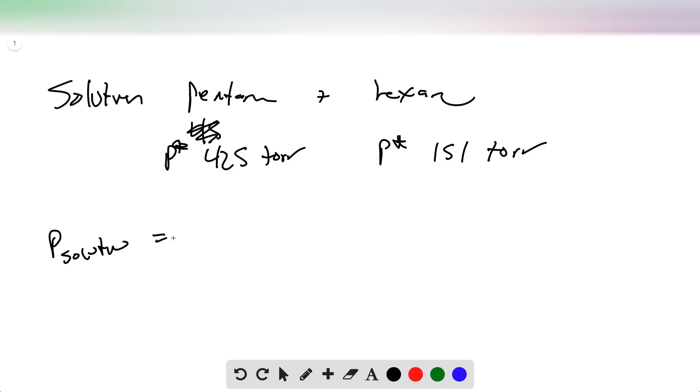Okay, so we have a solution of pentane plus hexane. The pure vapor pressure of pentane is 425 torr, P star C5 is 425 torr. P star C6 is 151 torr. P of solution is 258 torr, and we want to know what are the mole fractions.